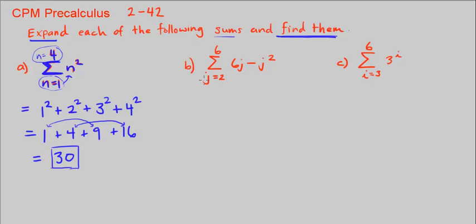Let's move on to b. Again, we're starting here at j is 2, stopping here at j is 6. So we're going to go from 2 to 3 to 4 to 5 and finally to 6. And we're going to plug it into this expression each time. So when j is 2, what do we have? We have 6 times 2 minus 2 squared. Plus, sigma means to add. So then j is going to be 3.